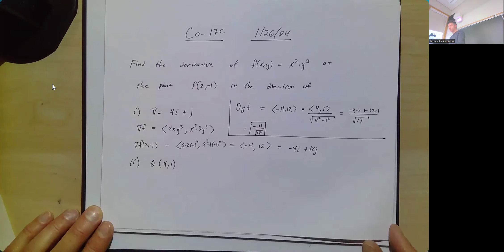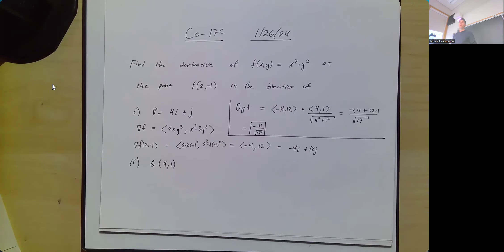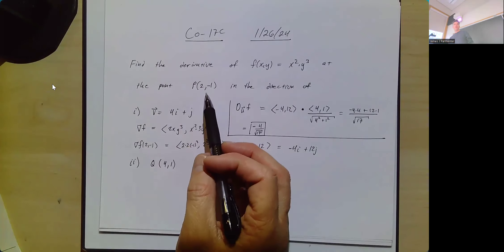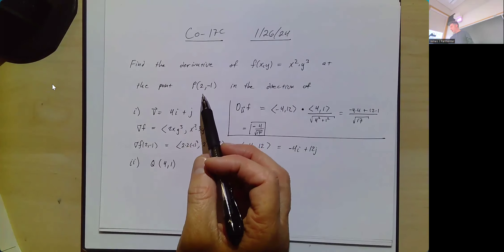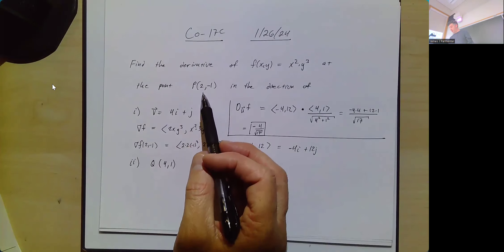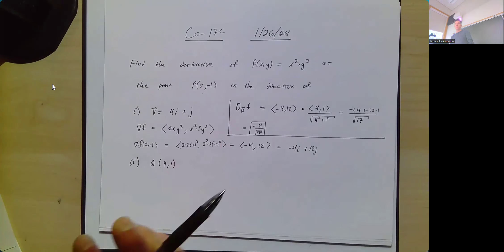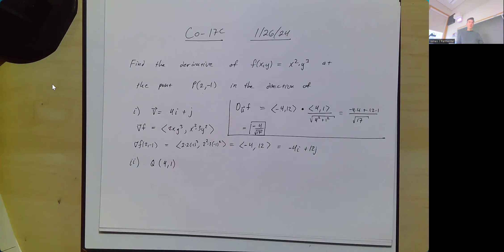What that means is that's the slope of the surface in the direction of that vector from that point. If you started at (2, -1) and went in the direction of this vector, your slope would be -4/√17, about -1, because √17 is pretty close to 4.